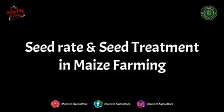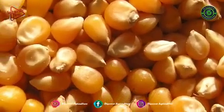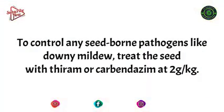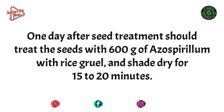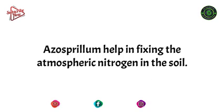Seed Rate and Seed Treatment in Maize Farming: 10 to 11 kg of maize seed is required for sowing a 1-hectare field. To control any seed-borne pathogens like downy mildew, treat the seed with Thiram or Carbendazim at 2 g per kg. One day after seed treatment, treat the seeds with 600 g of azospirillum with rice gruel and shade dry for 15–20 minutes. Azospirillum helps in fixing the atmospheric nitrogen in the soil.